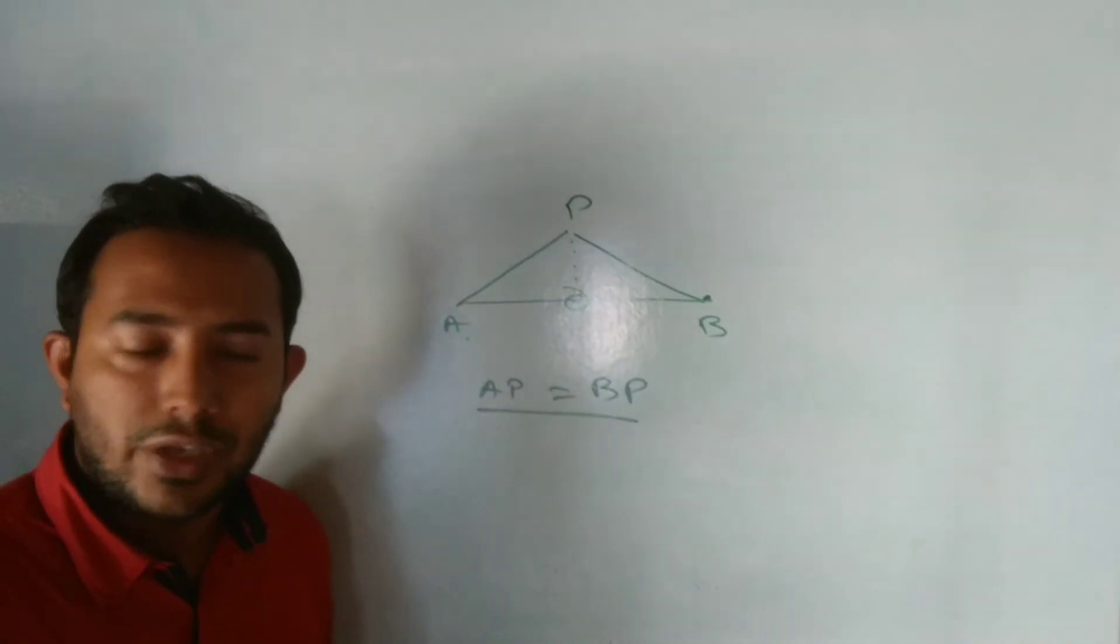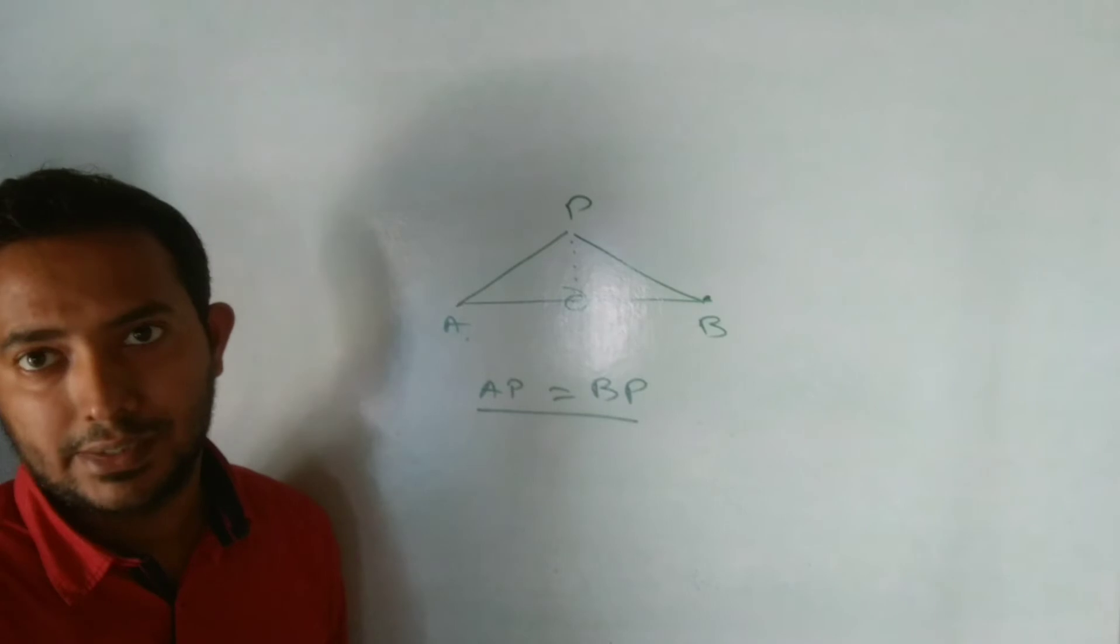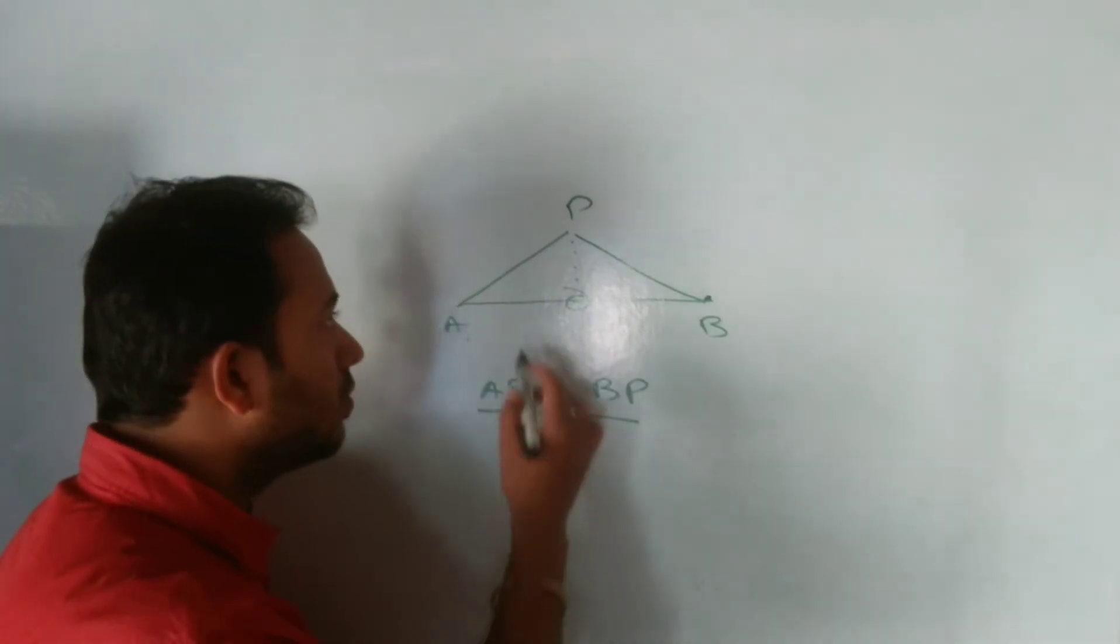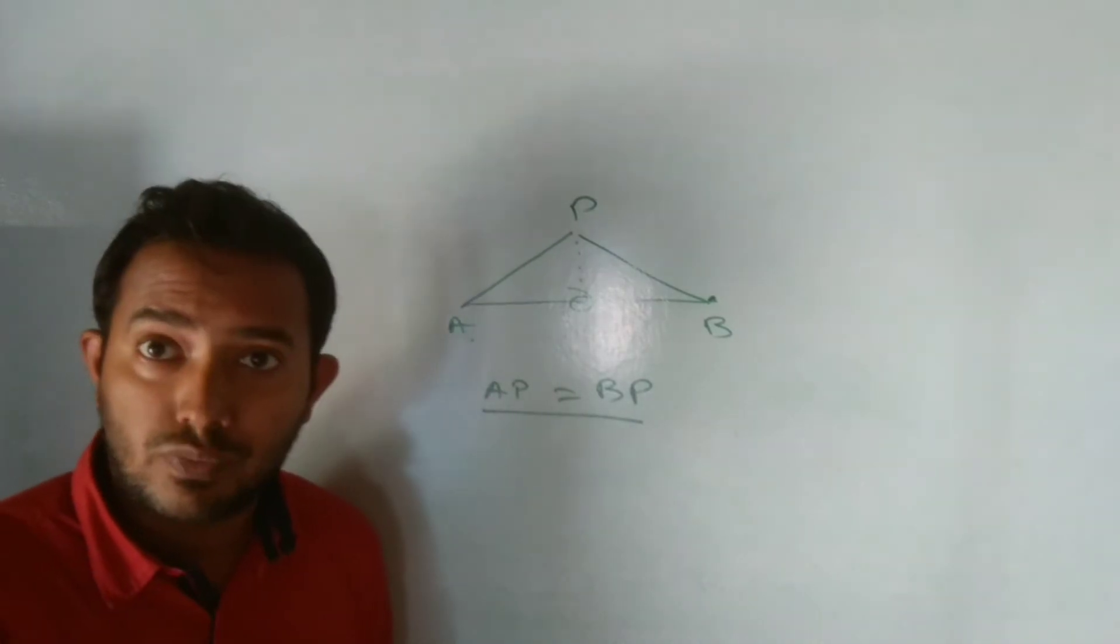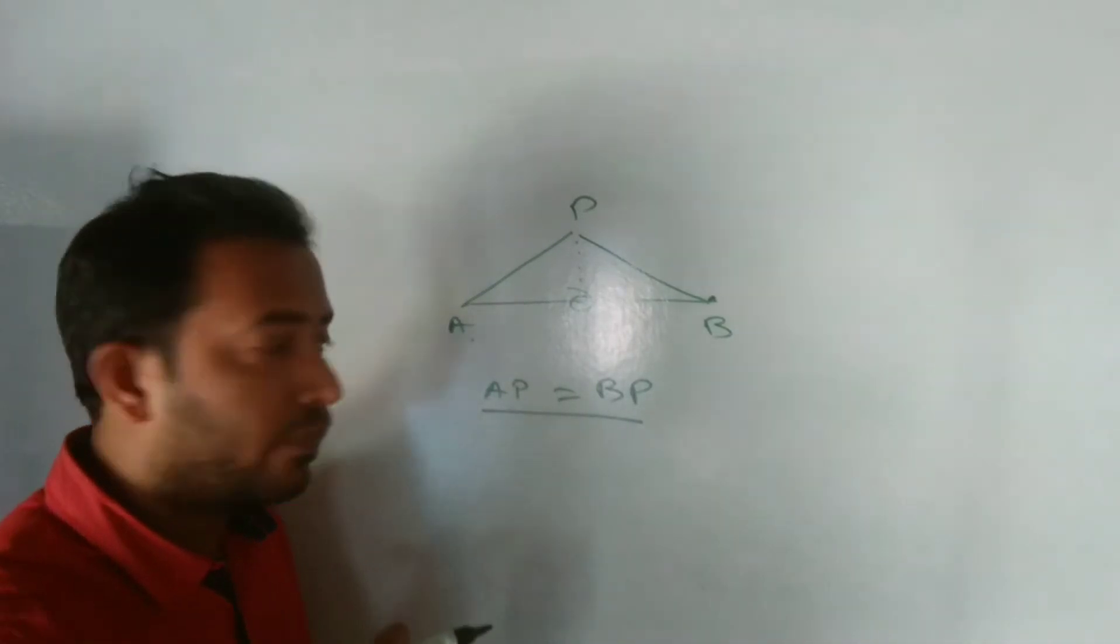So when it will be written that find the midpoint, then you need to use midpoint concept. And when it will be asked that P is equidistance from A and B, then you need to use distance formula. There's a difference between these two.